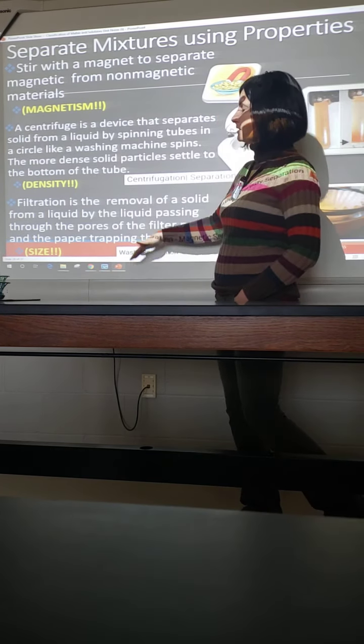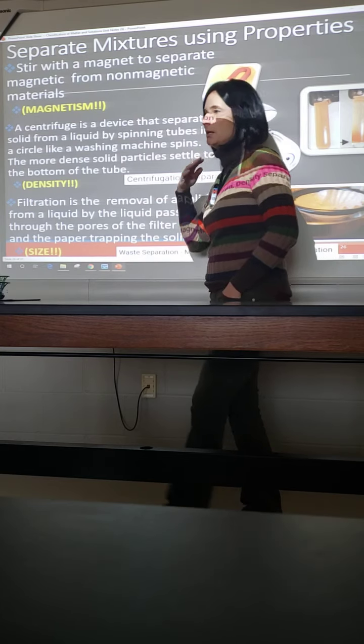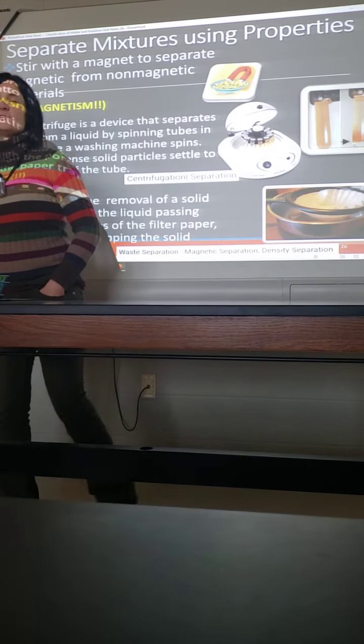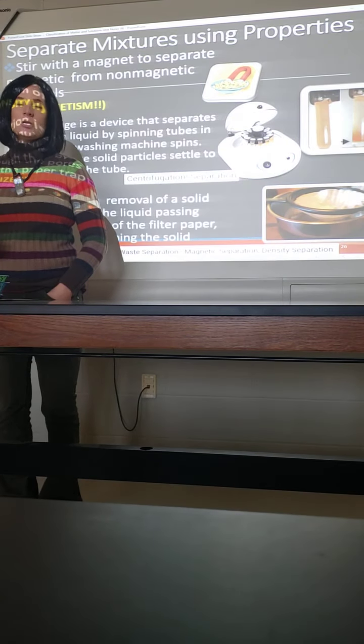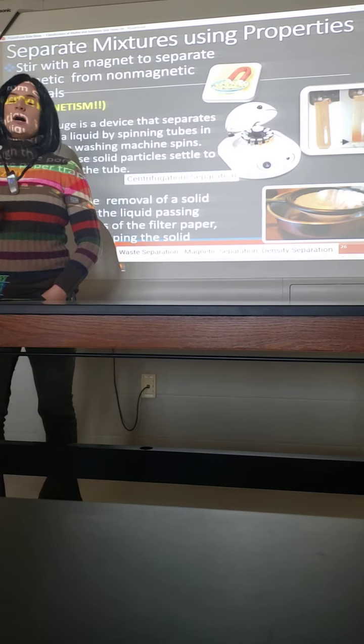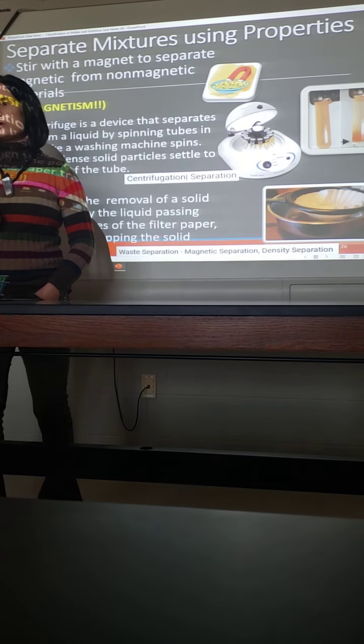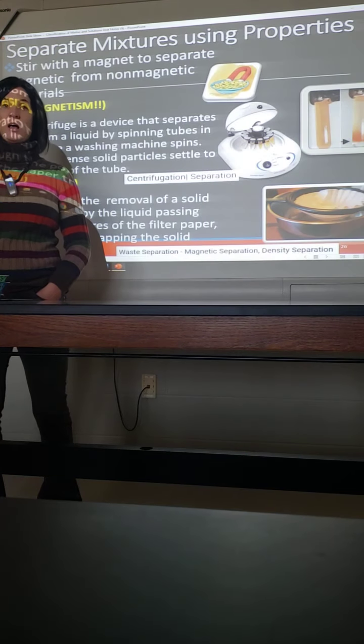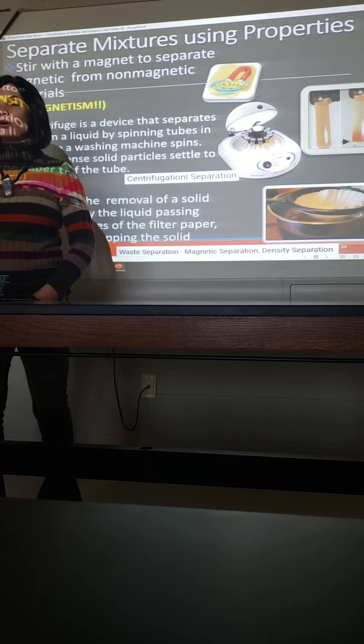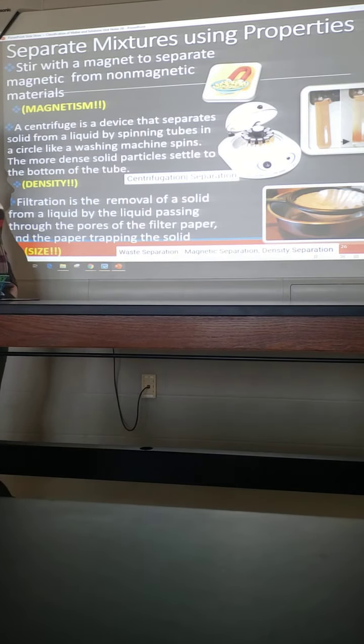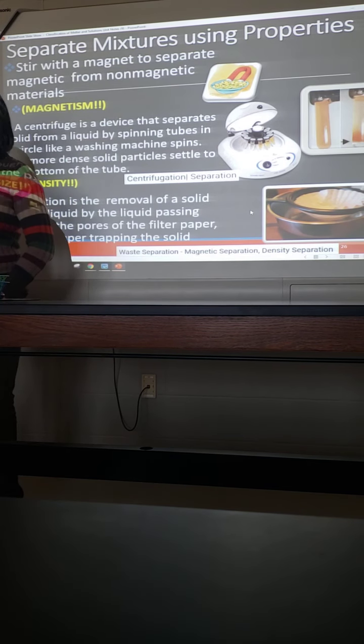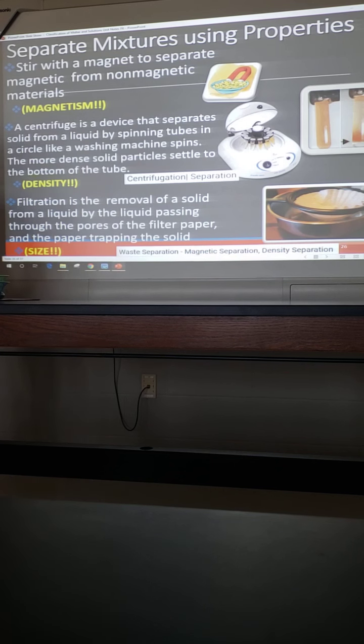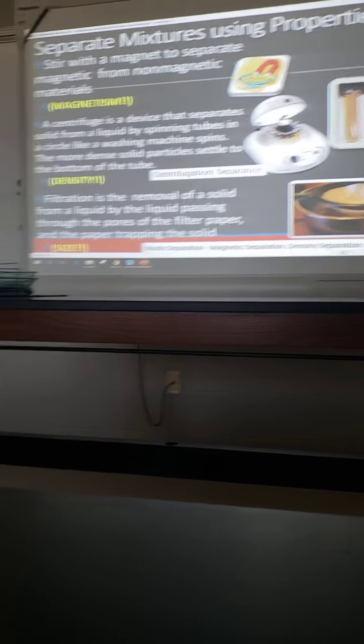So these are three very simple ways that you can use physical properties that we've already talked about to separate out a mixture. And again, this can work. Sometimes it works good with solids and liquids. Sometimes it works better if it's just with solids. Sometimes it works better if you just have all liquids. So you just kind of have to depend on what the situation is calling for. And that will let you determine what is the best way to go about separating something. So we're going to stop there.